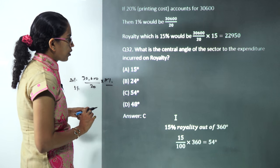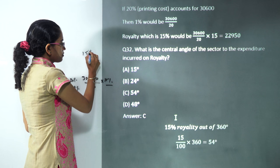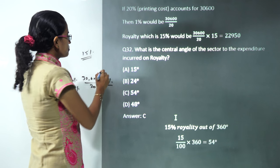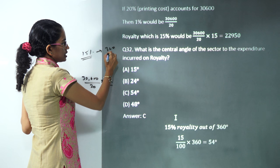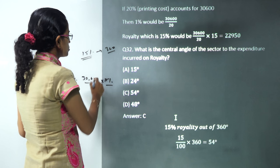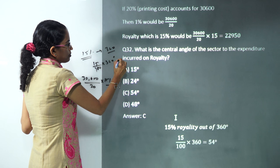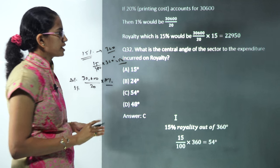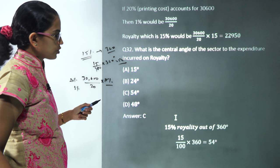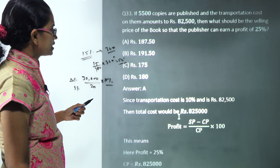The next question is: the central angle for the sector of expenditure incurred on royalty would be? So royalty is 15%, so 15% of 360 degrees is what I have to calculate. You would have 15% of 360 degrees and that would be 54 degrees.